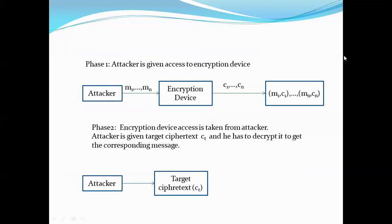In this example, the attacker is given access to the encryption device only once and can send any number of messages M1, M2, ..., Mn. The device generates ciphertexts C1, C2, ..., Cn, giving the attacker pairs (M1, C1) through (Mn, Cn). He performs analysis on these pairs, and once done, access to the encryption device is taken away. He cannot request new ciphertexts — he is then given a target ciphertext and must decrypt it to get the corresponding message.